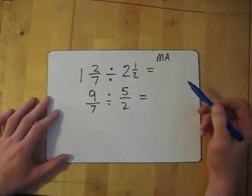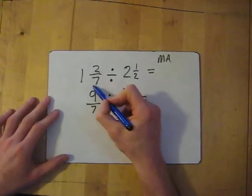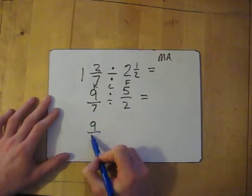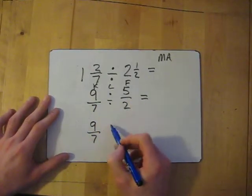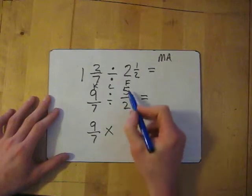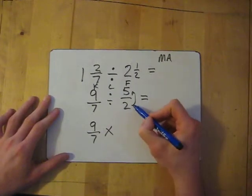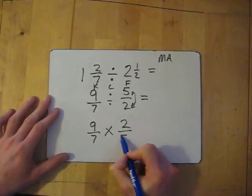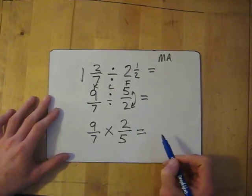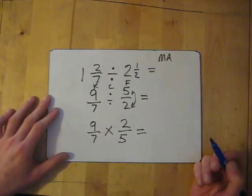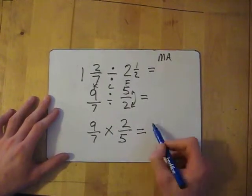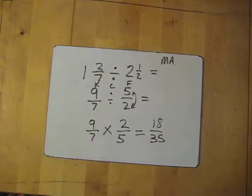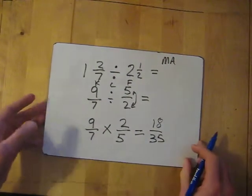Now we need to apply KCF. We keep 9 over 7 exactly the same, we change the divide to multiply, and we flip the second fraction — so the 2 goes to the top and 5 goes to the bottom. Then we simply multiply: 9 times 2 is 18, 7 times 5 is 35. So the answer is 18 over 35.